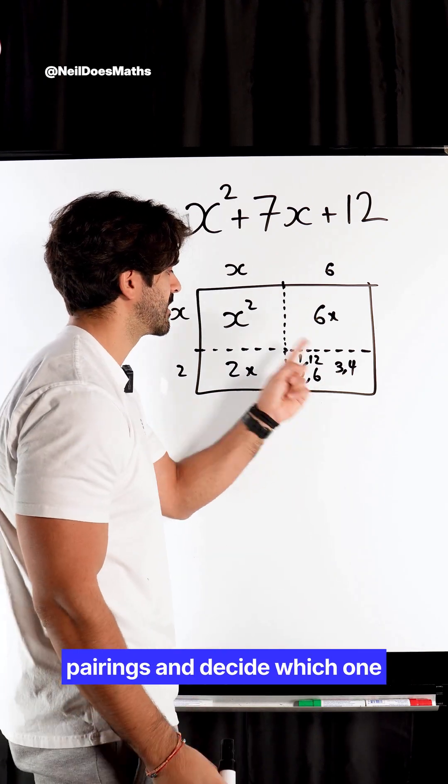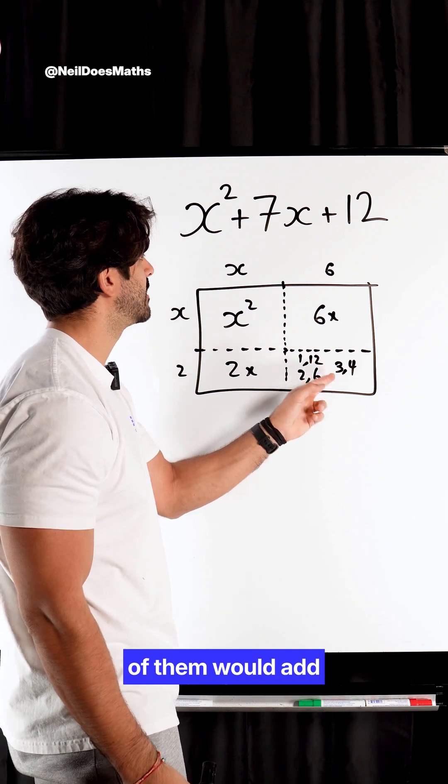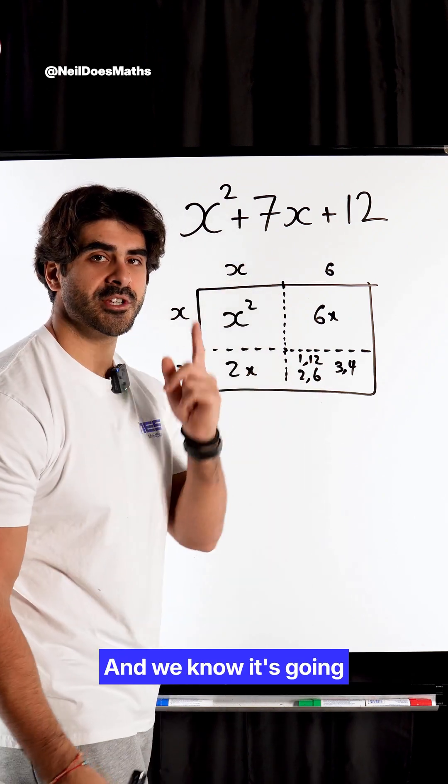which is why we look at these pairings and decide which one of them would add to give you this coefficient. And we know it's going to be 3 and 4.